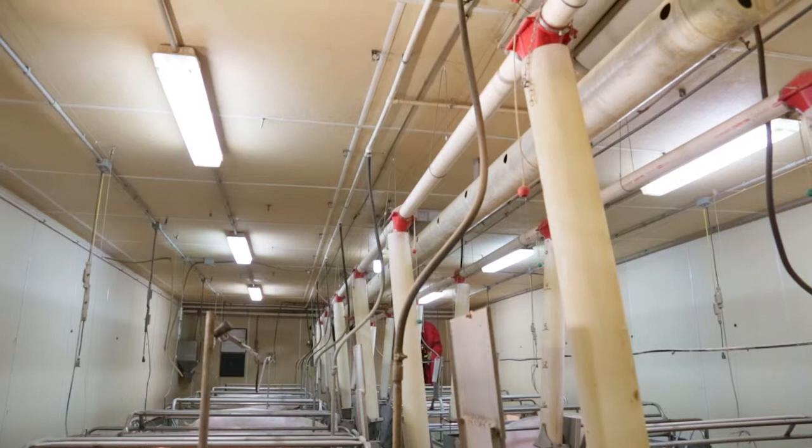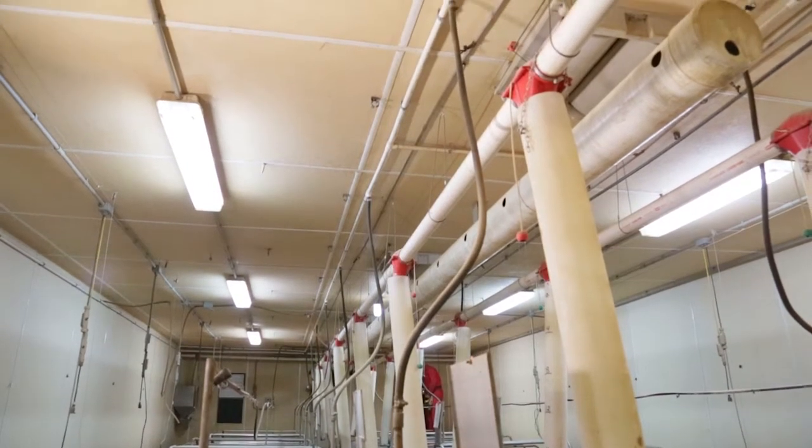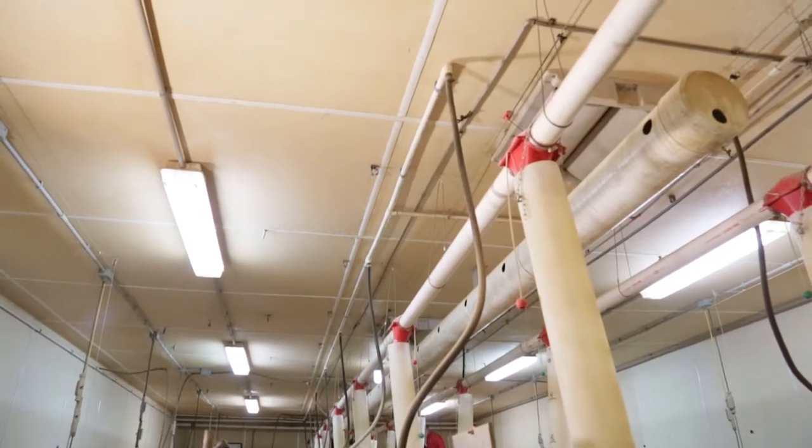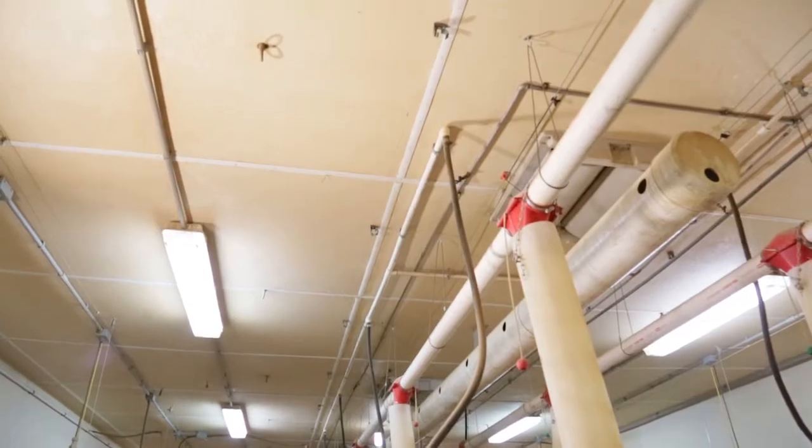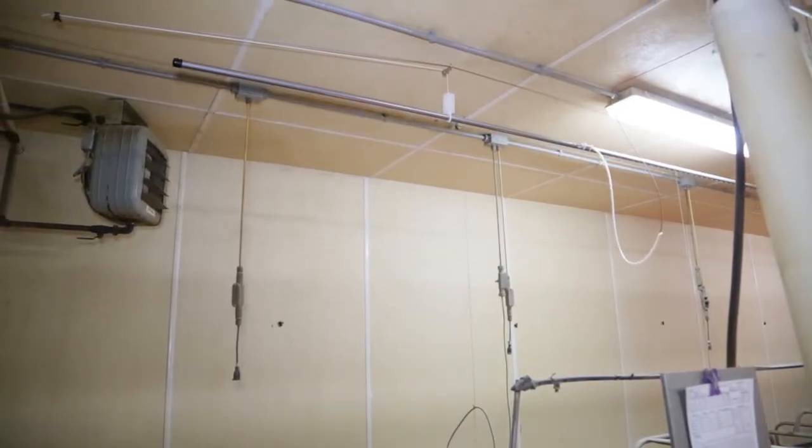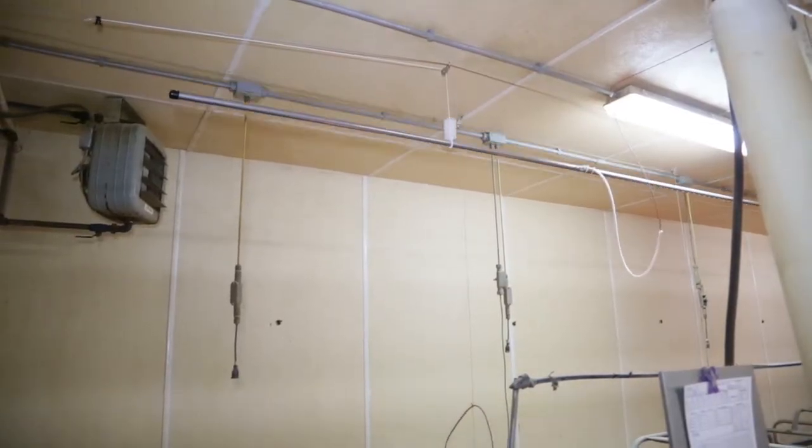Look for obstacles such as ceiling vents, lights, feed lines, etc. that will prevent the corona pipe from rising up and out of the way of the workers. A fully lifted corona pipe will be 8.5 to 9.5 inches below the ceiling.